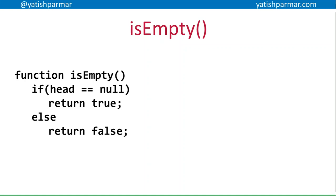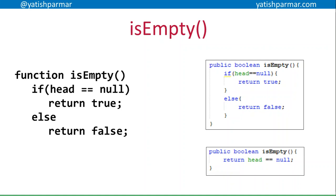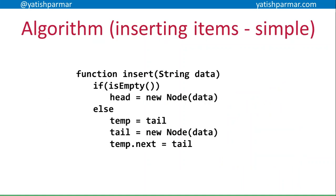Before we move on, I should show you a bit more of that algorithm in Java. There's an isEmpty function which is quite important — you need to find out whether the list is empty or not. The long way is with an if-else, or you can do it in a single line by just returning whether the head is null, which gives you a true or false. So to insert data: if the list is empty, head is equal to a new ListNode. If it's not empty, temp is equal to the tail pointer, the tail pointer is now equal to a new node, and then temp.next is equal to the tail — because we stored the previous end node temporarily in temp so we could move the tail to the new node and copy that pointer.